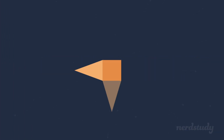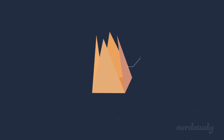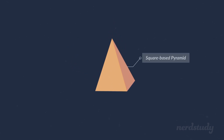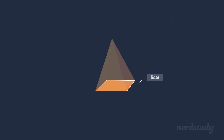Here is a square-based pyramid. Let us first identify what we call each part of this pyramid so that we can refer back to them. We'll call the bottom of this pyramid the base, and we'll call the rest of the surfaces the lateral faces.